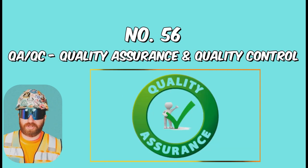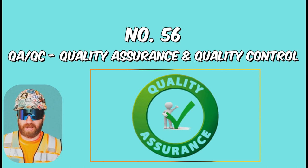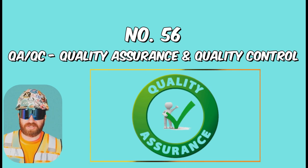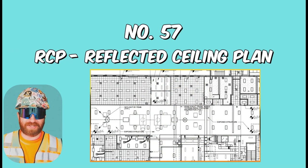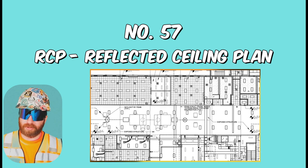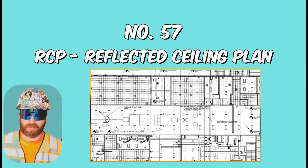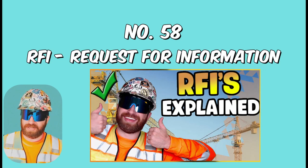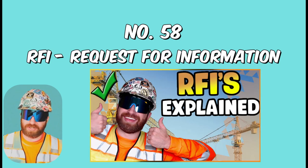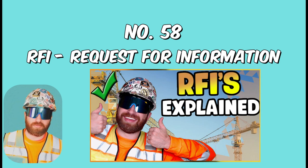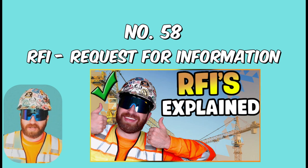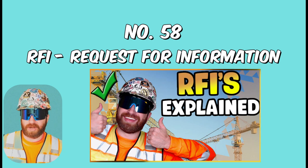QA/QC, Quality Assurance and Quality Control — the process of managing quality to ensure specification standards are met or exceeded during construction. RCP, Reflected Ceiling Plan — this is a type of drawing similar to a floor plan but shows dimensions, materials, and other key information about the ceiling. RFI, or Request for Information, is the formal process of asking a question to clarify intent before bidding or during the construction process.